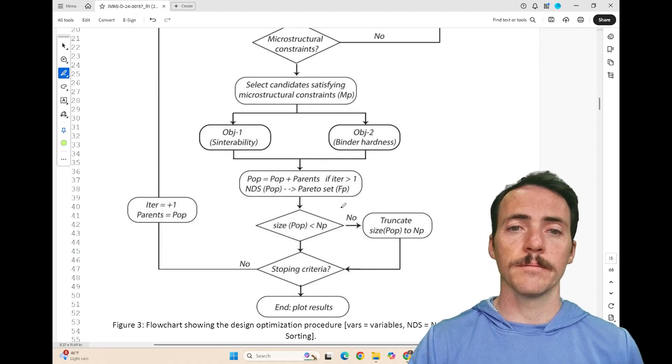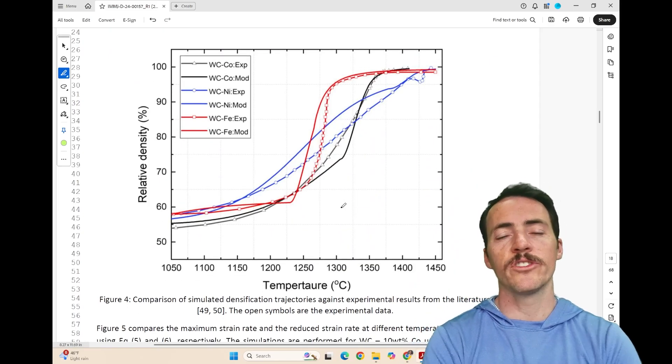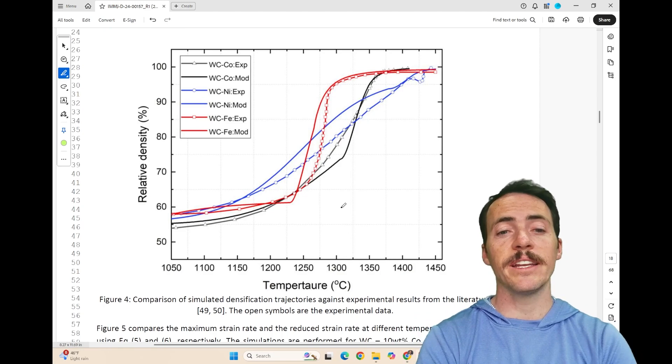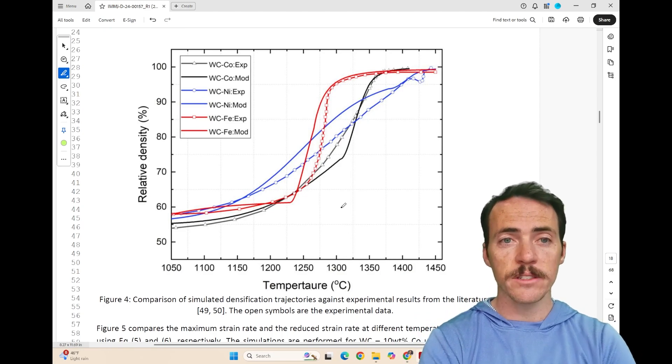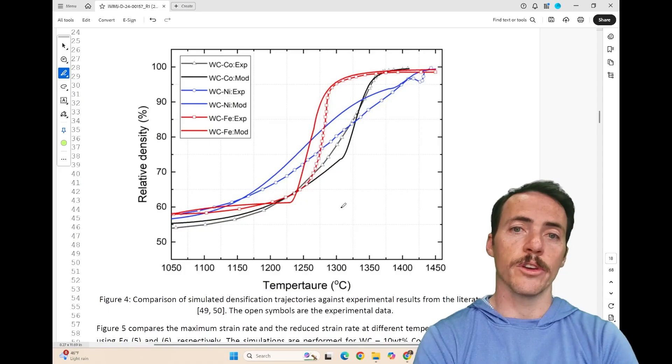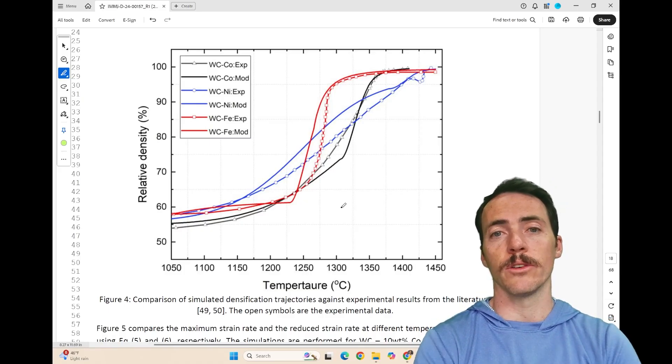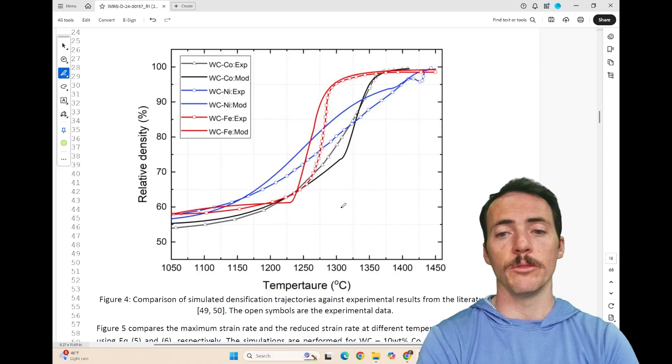So they put this to work and what they find can be summarized here in this figure. What you're seeing here is a comparison of the simulated densification trajectories against actual experimental results from literature. So you can see how well these actually track for, say, nickel-based or iron-based materials that's going to help them try and find new materials.